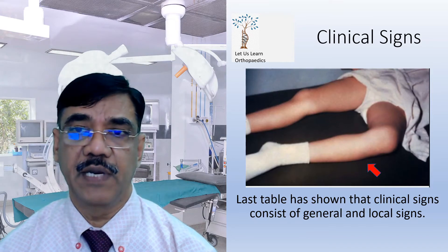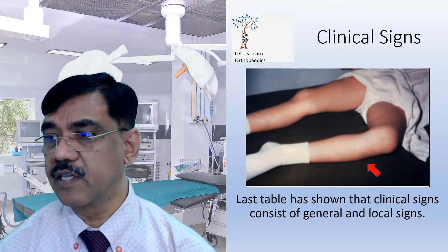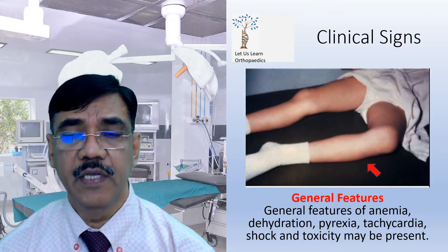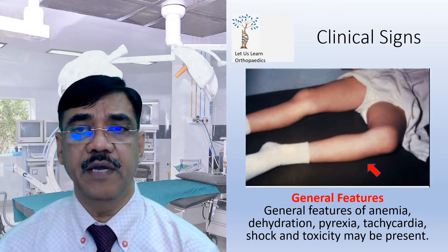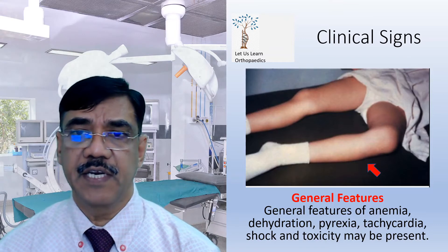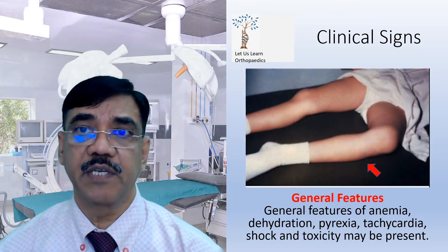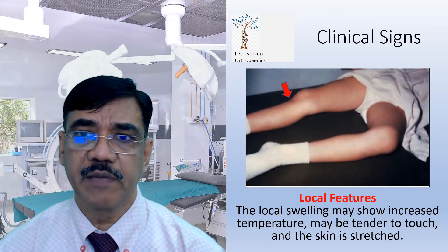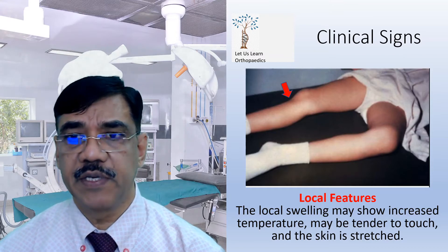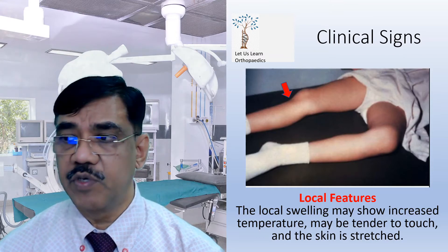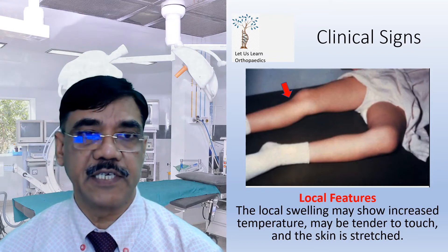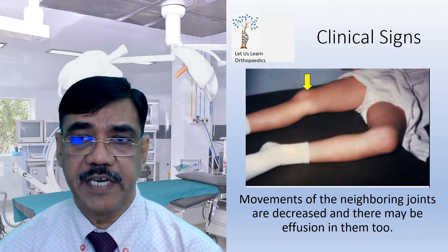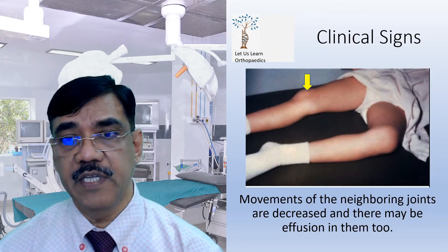The general features of anemia, dehydration, pyrexia, tachycardia, shock, and toxicity may be present. The local swelling may show increased temperature, may be tender to touch, and the skin is stressed. Movement of the neighboring joint is decreased, and there may be effusion in the joint as well.